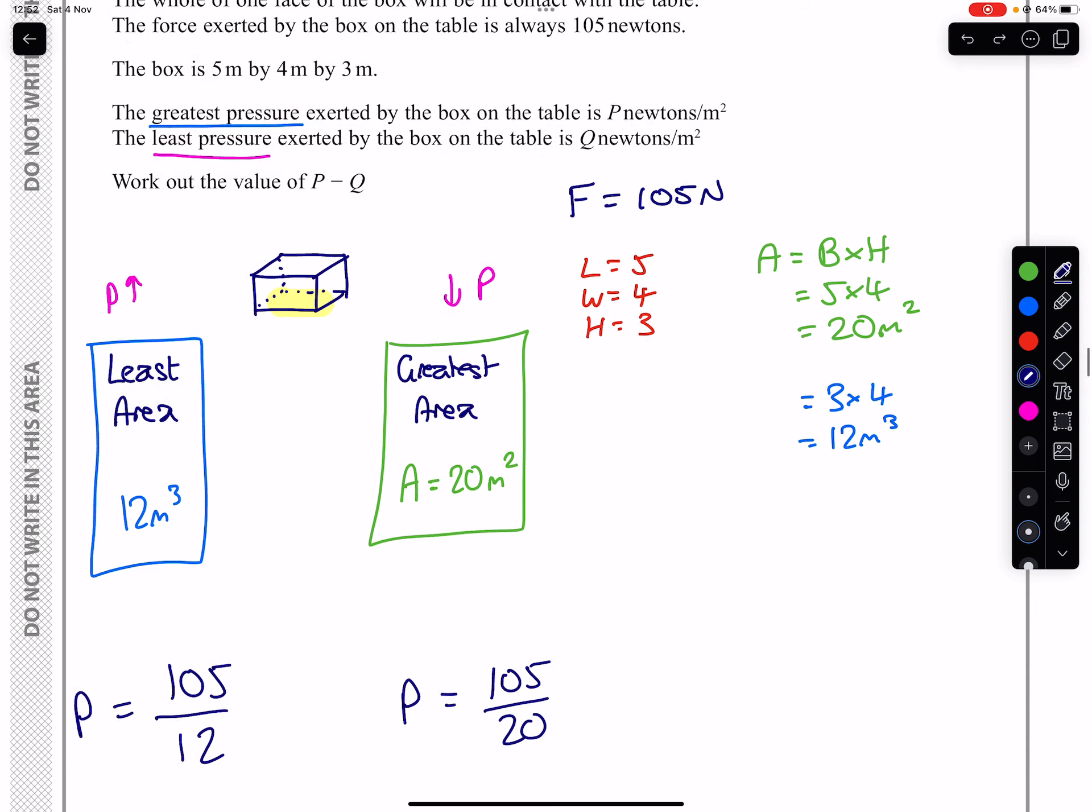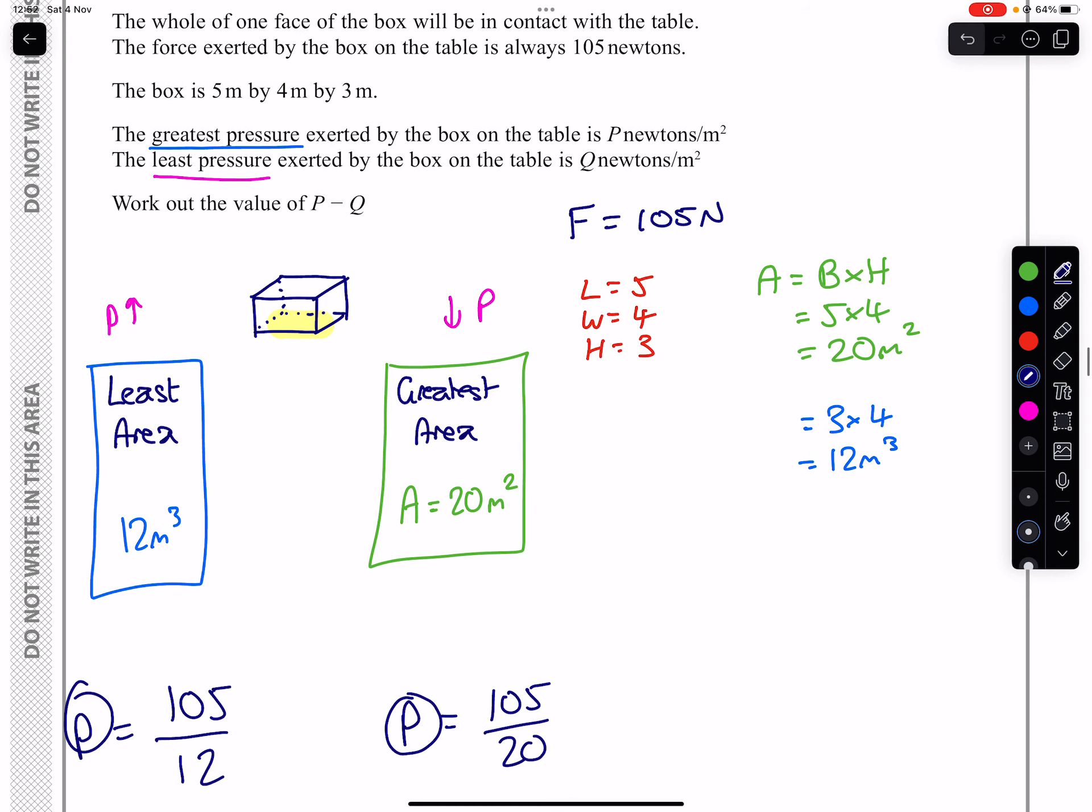It is important for me to, instead of using P for both of these, now make note of the values that the question gives us. So when we're dealing with the greatest pressure, which my color coding is a little off here, let me change this to green.